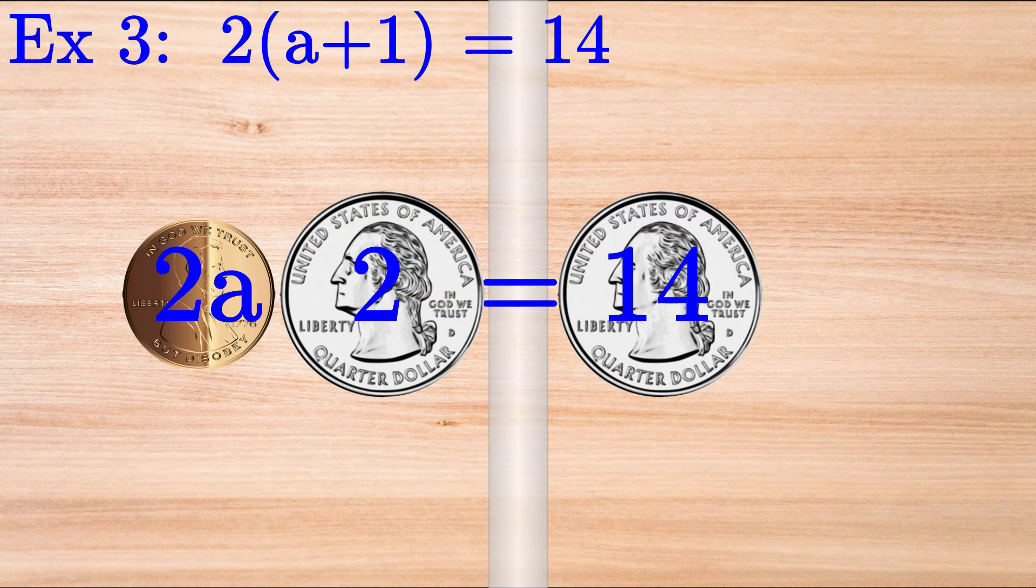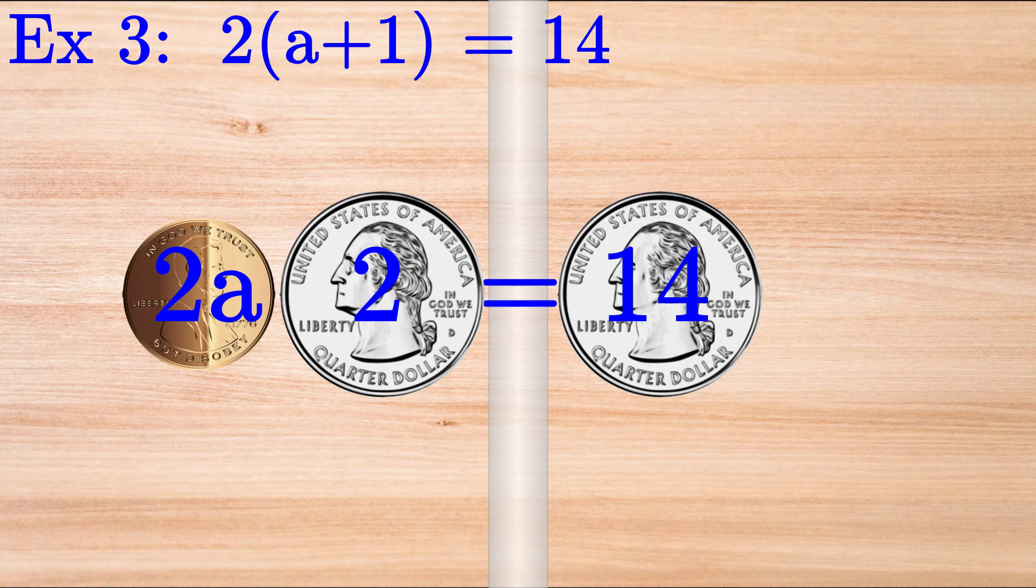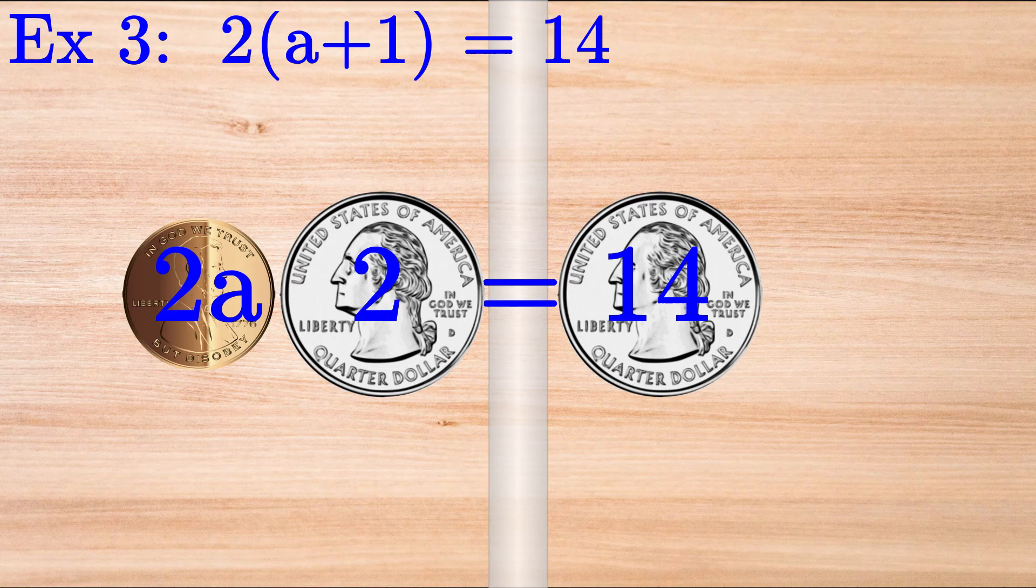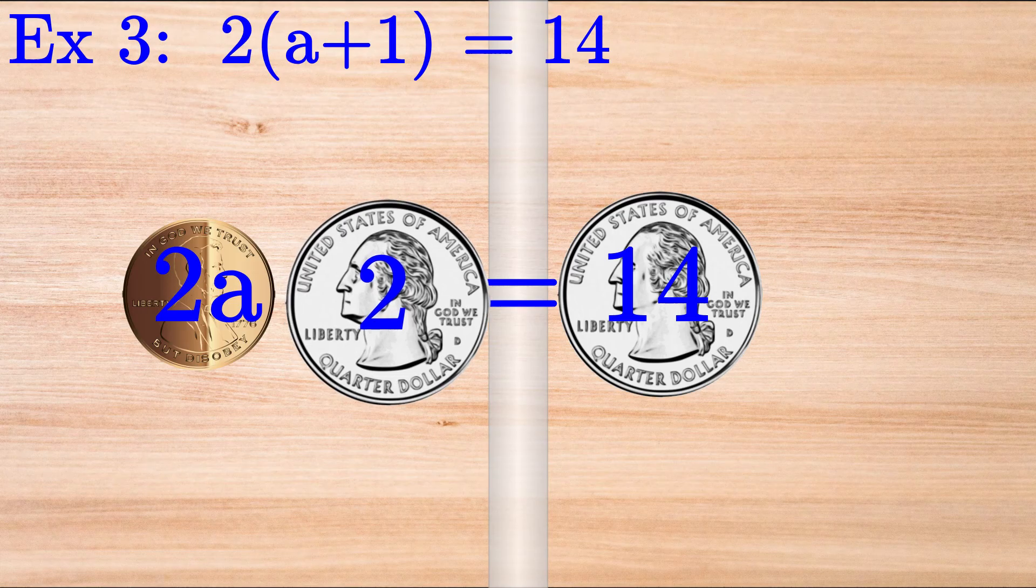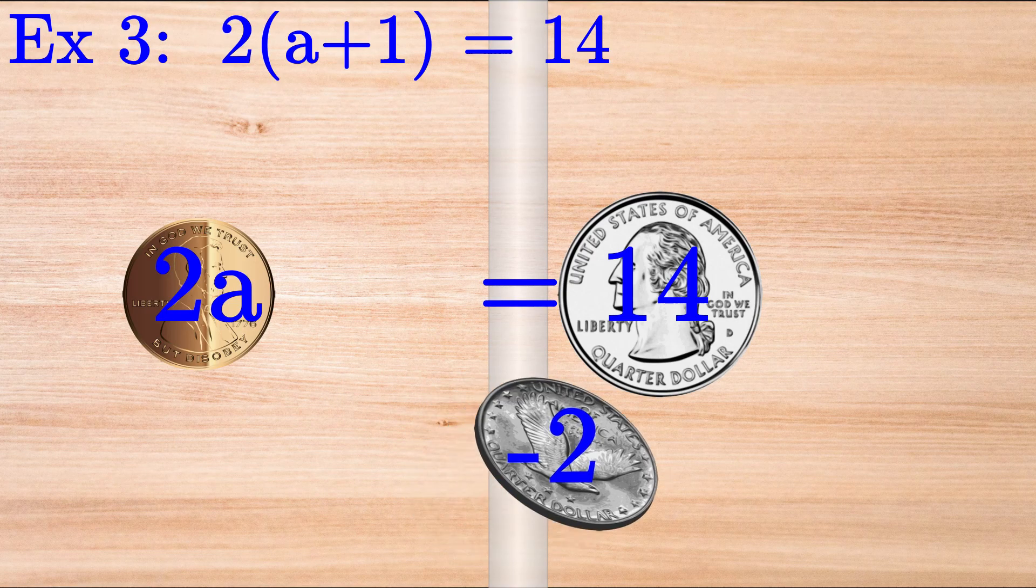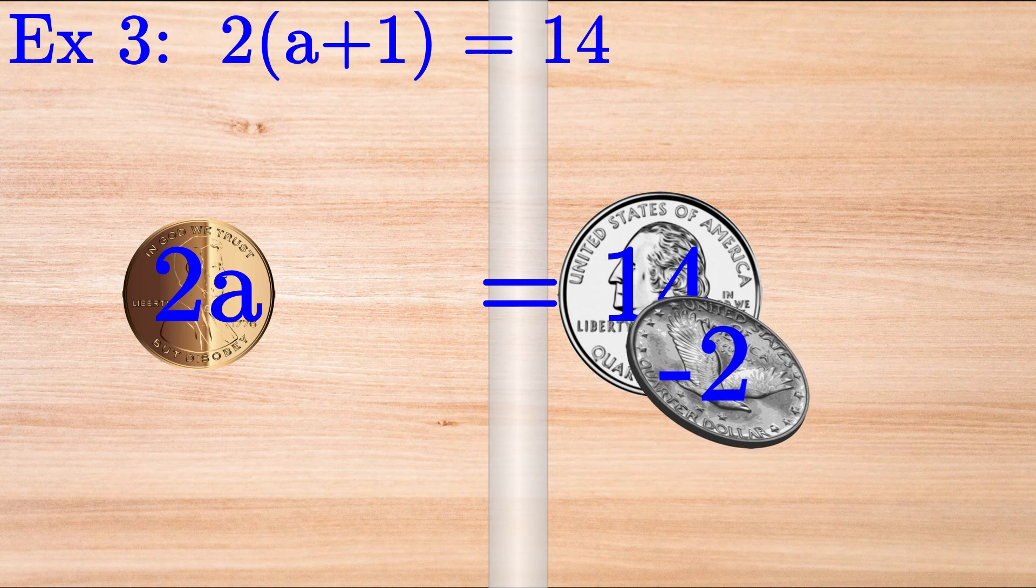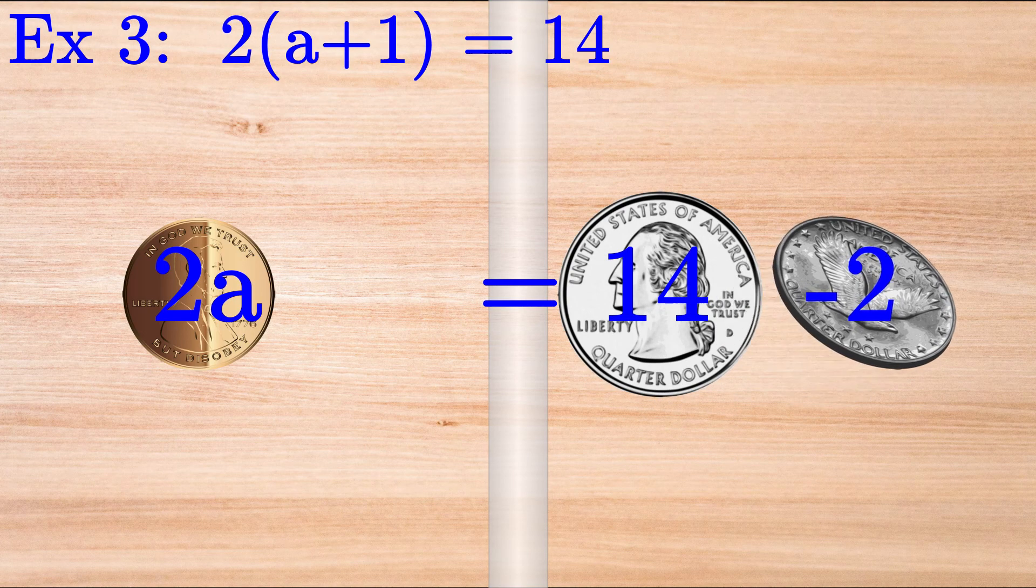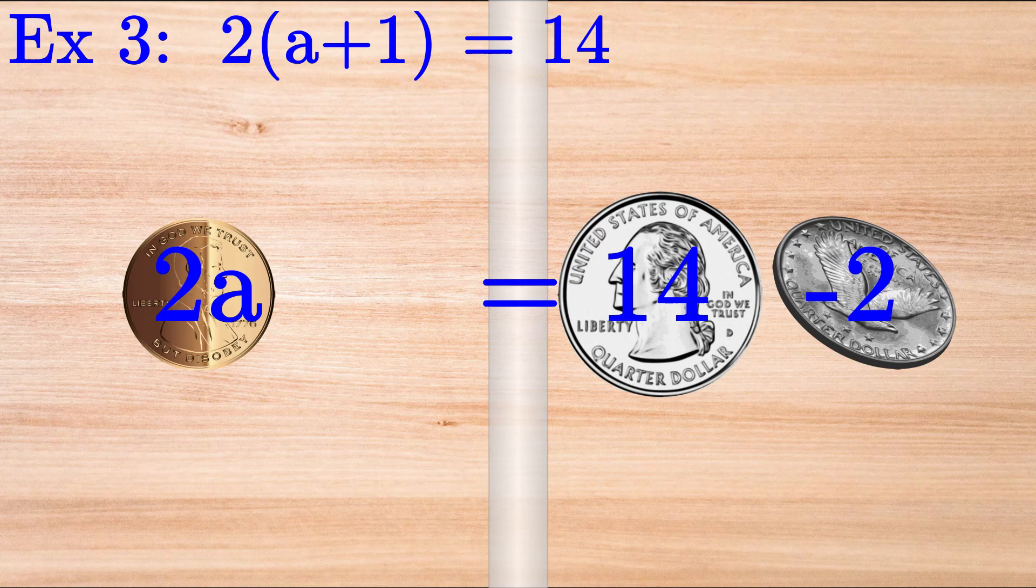And now we have our coins. We have a 2A coin and a 2 coin on the left-hand side. And we have a 14 coin on the right-hand side. Let's move the 2 coin to the right-hand side and flip it to negative 2. This way, 2A equals 14 minus 2, which is equal to 12.